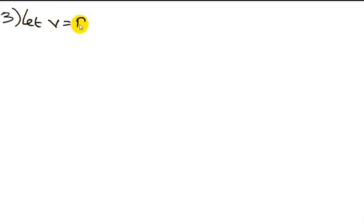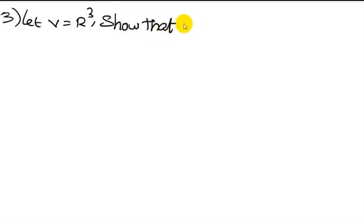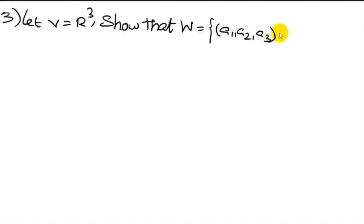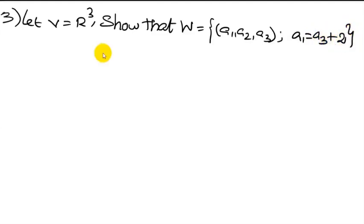Let V equal ℝ³. Show that W, equal to the set of ordered triples (a1, a2, a3) where a1 equals a3 plus 2, is not a subspace of V.